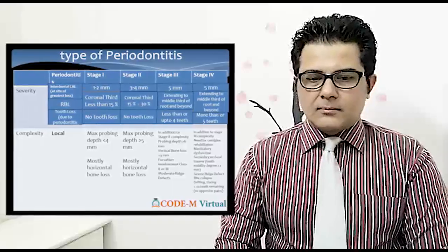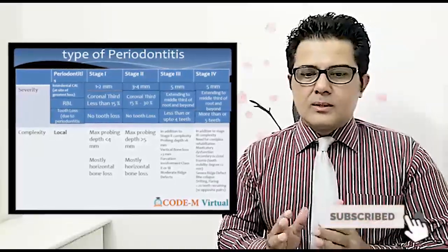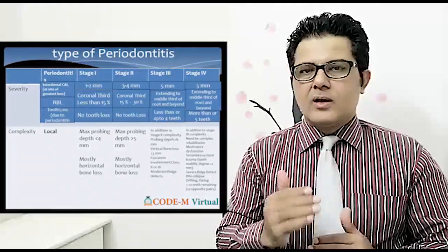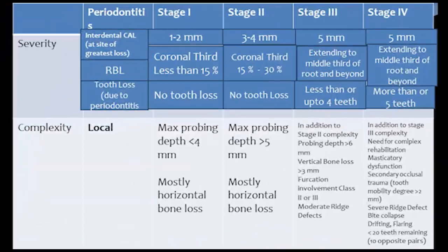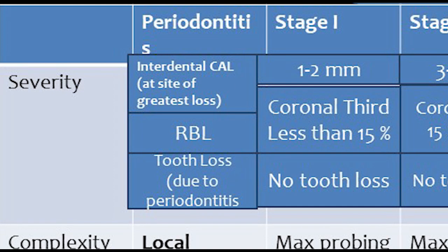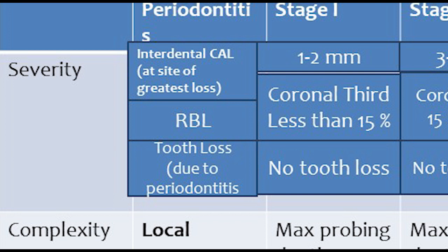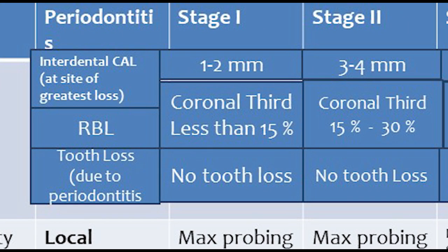So, type of periodontitis. When we are going to determine the type of periodontitis, we have to check with the severity and complexity of the disease. For severity, we check the interdental clinical attachment loss at the site of the greatest loss, how much loss is there, and we check the RBL. We also check tooth loss due to periodontitis. If there is 1-2 mm clinical attachment loss and the coronal third RBL is less than 15%, and there is no tooth loss, this is Stage 1.